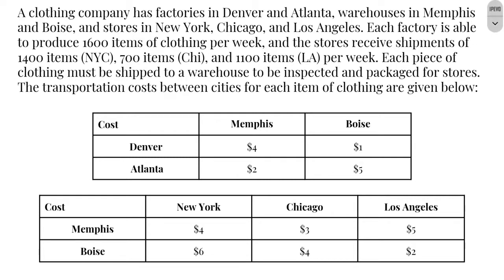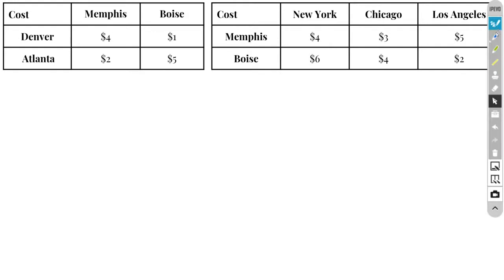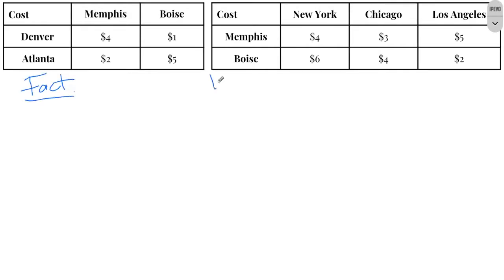We are given the cost of shipping items from the factories to the warehouses, and then the warehouses to the stores. We aren't going to be solving this problem today, just setting it up. Generally when we have a transshipment problem or any sort of transportation problem, our goal is to minimize something — in this case, because we're given the costs, we are looking to minimize our cost of shipment. So let's set up a diagram to help us better understand this problem.